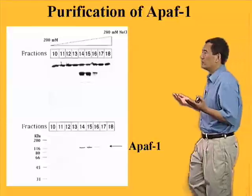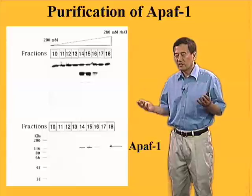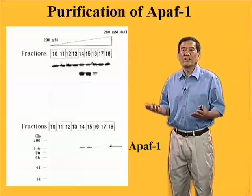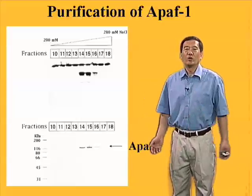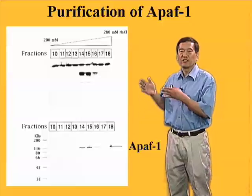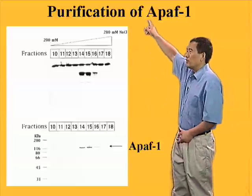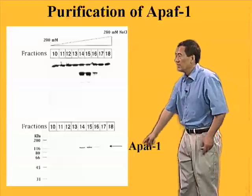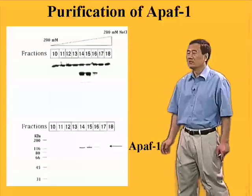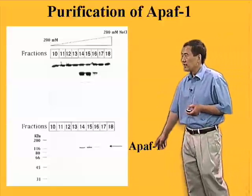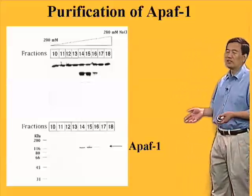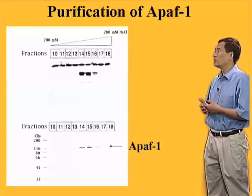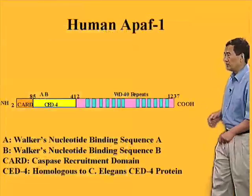One reason we were so surprised about cytochrome C is that its previous electron transfer activity has nothing to do with its ability to activate caspase. We did not know at that time how cytochrome C was able to activate caspase, so understanding that process required purification and identification of the other two proteins, one of which is APAF-1. Using the same strategy — fixing two factors and purifying the third to homogeneity — we identified APAF-1, which runs at about 140 kilodaltons. The protein sequence revealed it was a novel protein never characterized before, and we were able to clone the full-length protein.